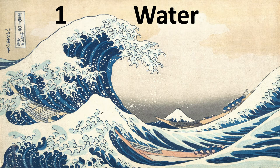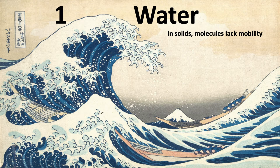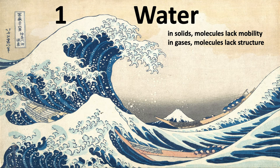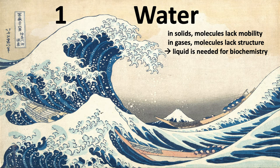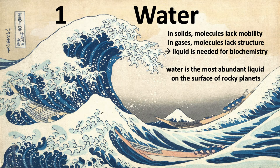So one, water. Maybe in solids, molecules lack mobility. So maybe you can't have life evolving in solids. In gases, maybe the molecules lack structure, and so you can't form life. So we think, many of us think, that liquid is needed for biochemistry. And water is the most abundant liquid on the surface of rocky planets all over the universe.